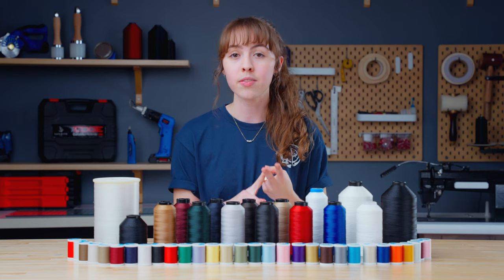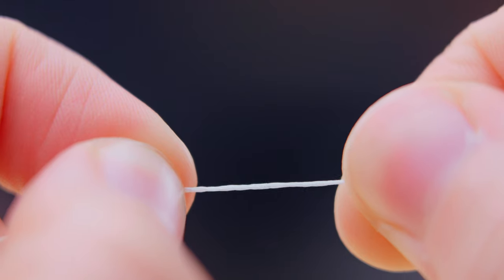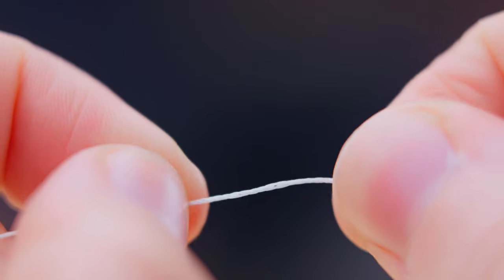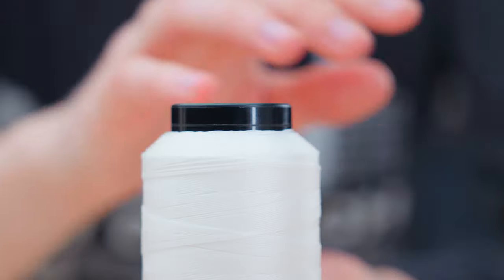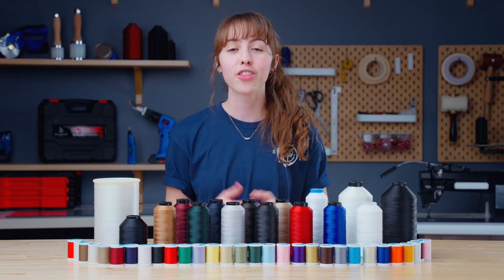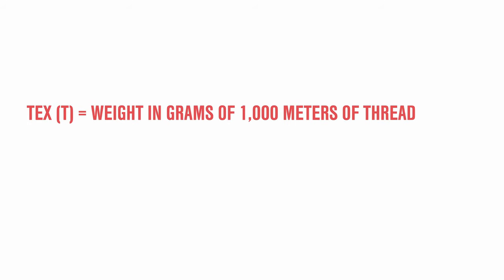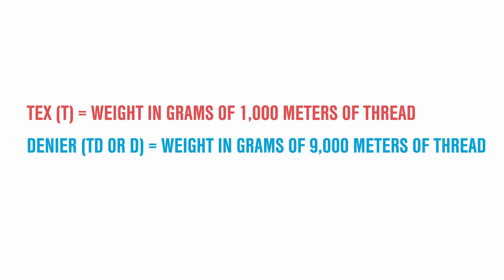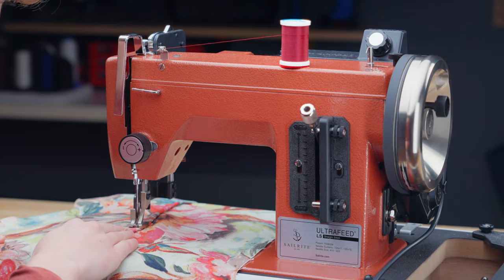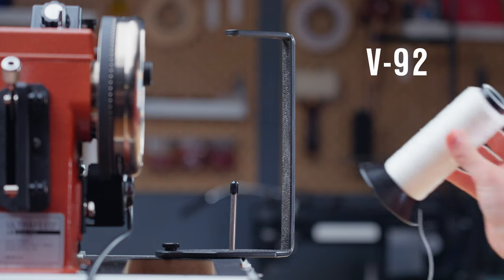Now that you understand thread weaves and fiber types, we can move on to thread size and thickness. A thread's thickness is actually measured by its weight, not its diameter, because thread is spongy and diameter cannot be measured accurately. Generally, as thread size increases, so does its strength. The most common size designations are TEX, denier, weight, and commercial sizes. TEX uses the weight in grams of 1,000 meters of thread. Denier measures thread at 9,000 meters. Commercial size uses set sizes from the thread's denier divided by 10. V69 is the heaviest commercial thread recommended for home sewing machines, though the Ultrafeed can handle threads up to V92.